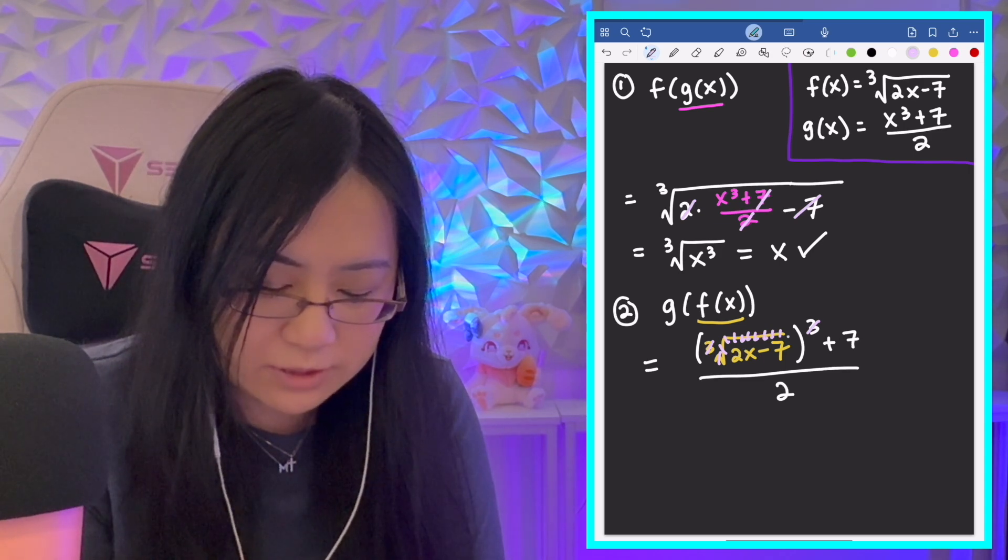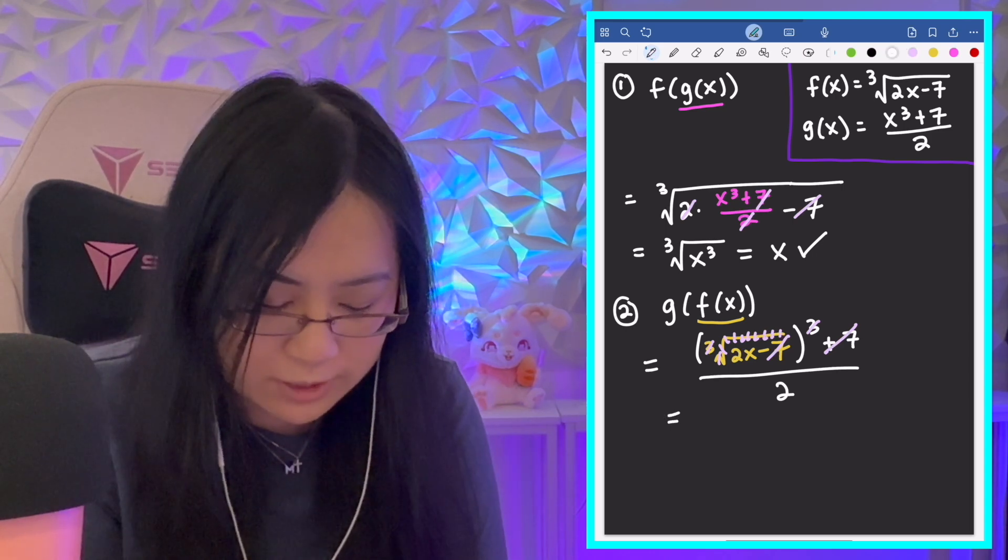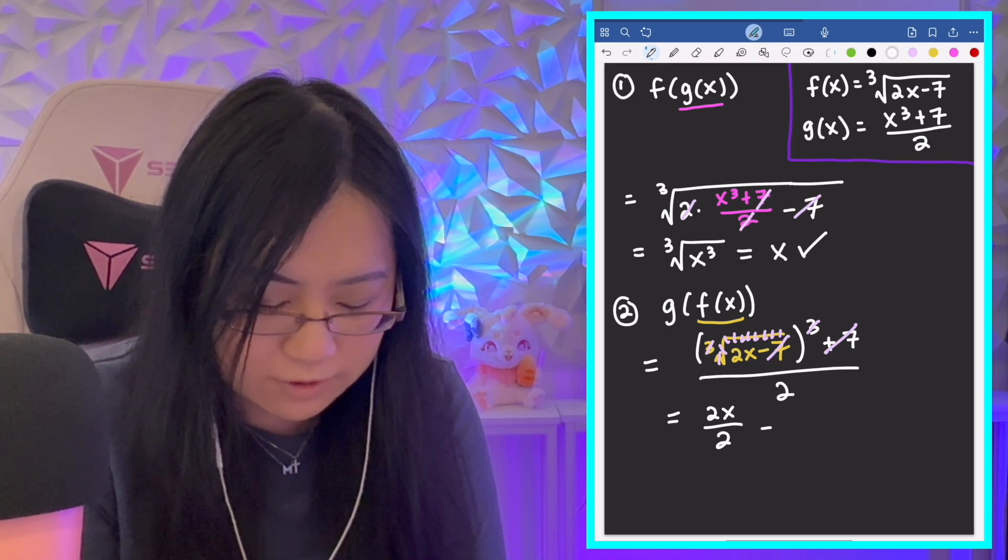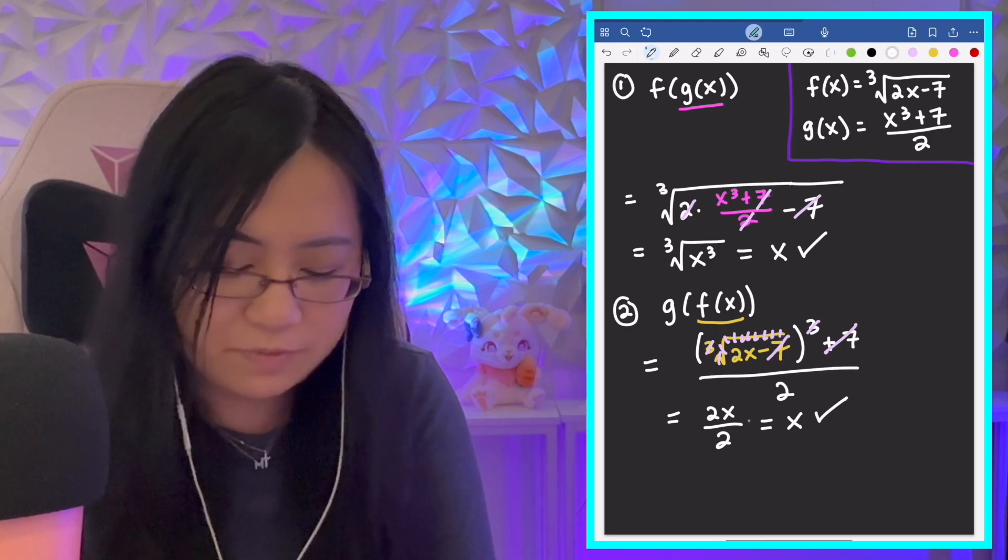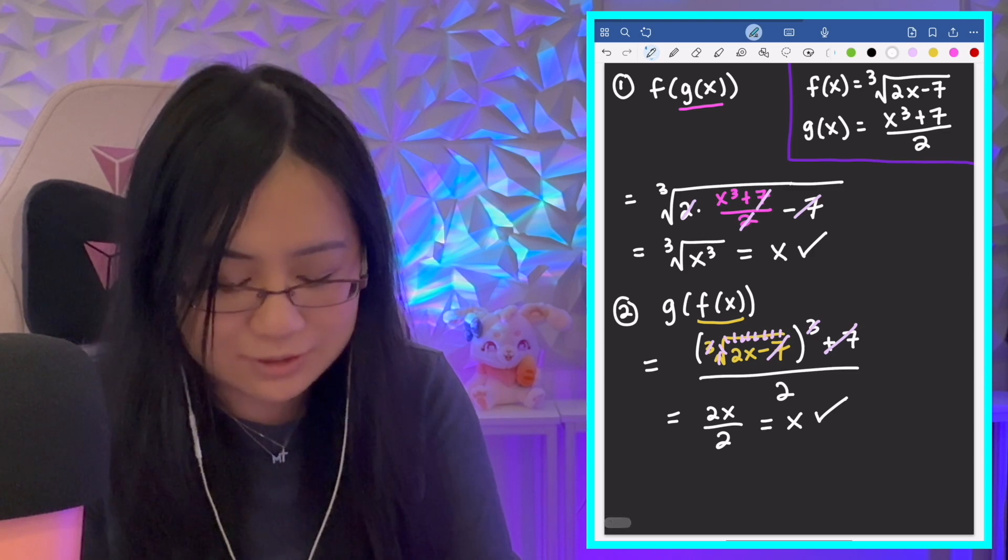So, the minus 7 plus 7 cancel, and you're left with 2x over 2, and the 2s cancel, and you're left with x also. So, again, like we said, we can do this step by step if you actually want to show out the algebra, but that's the general concept here.